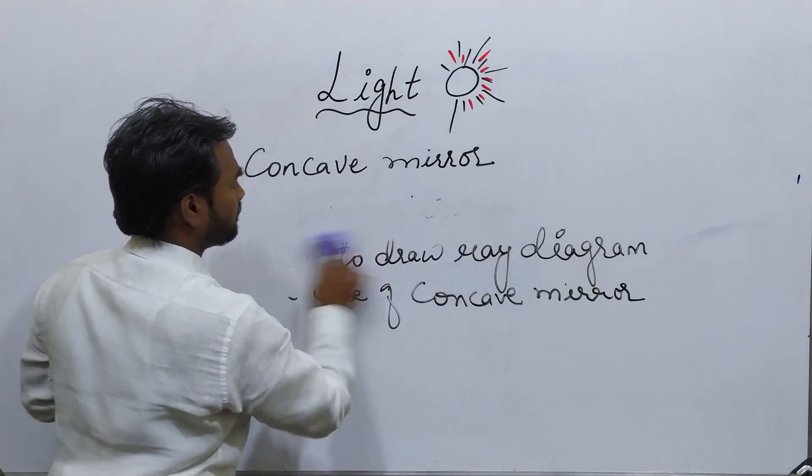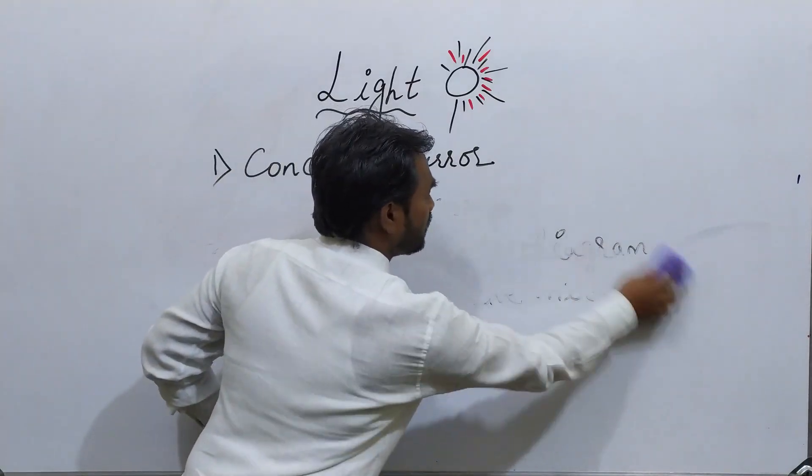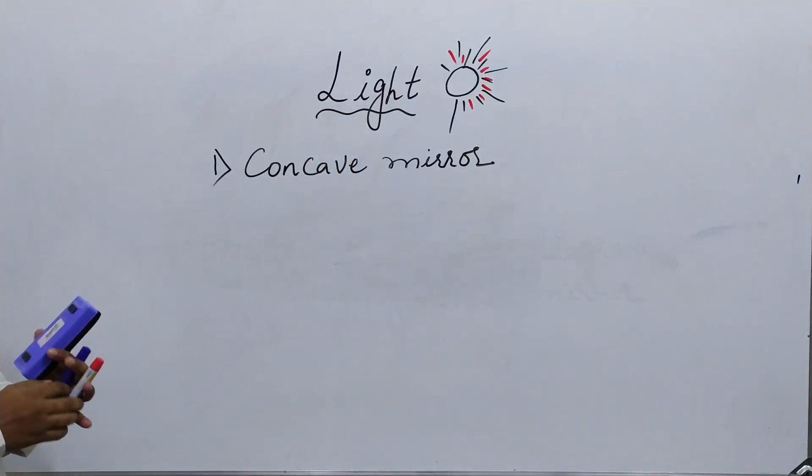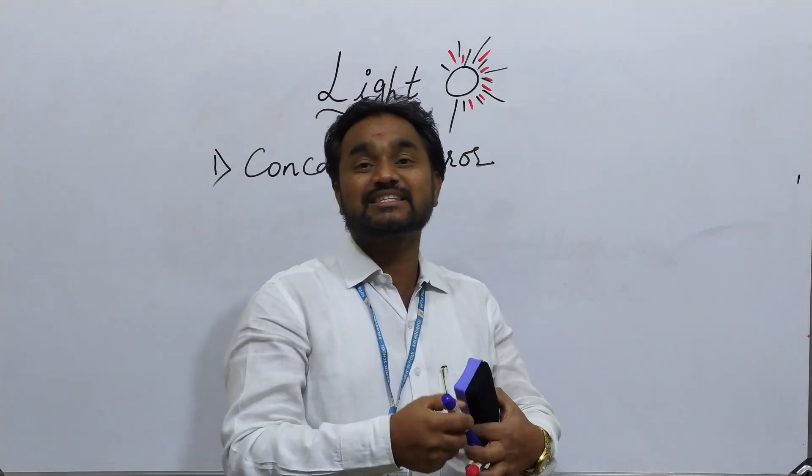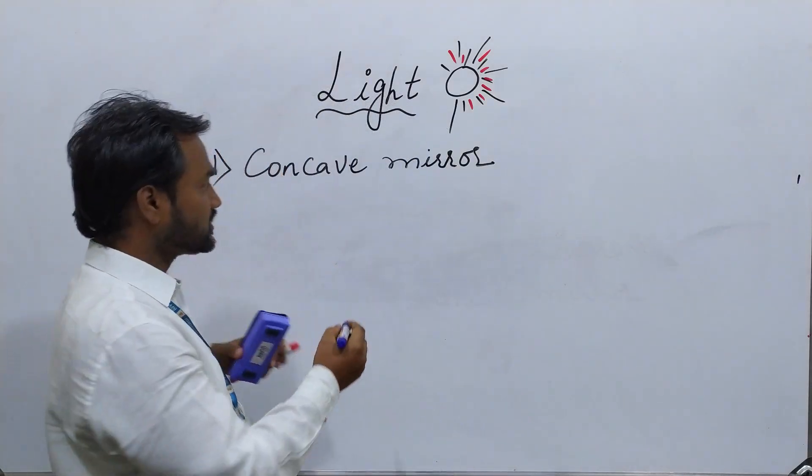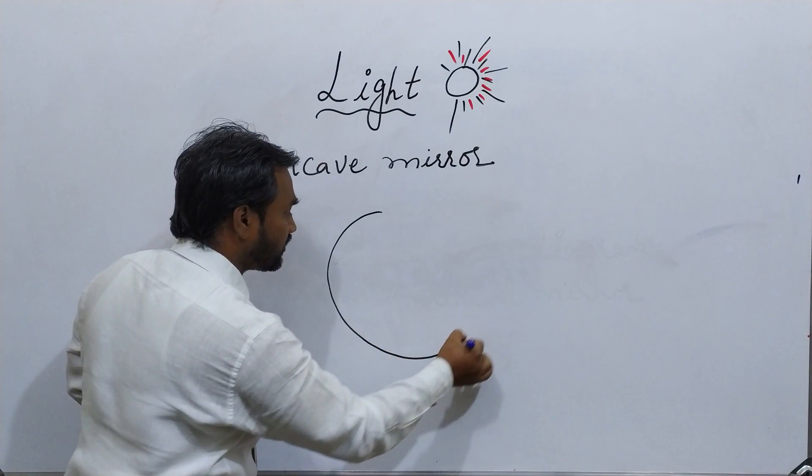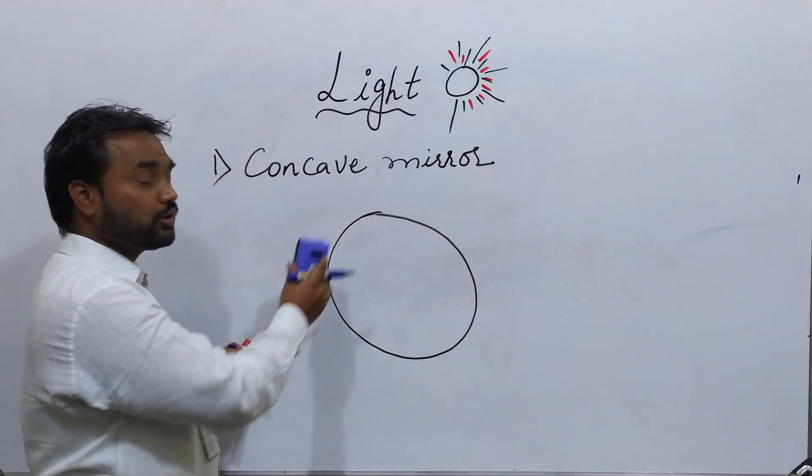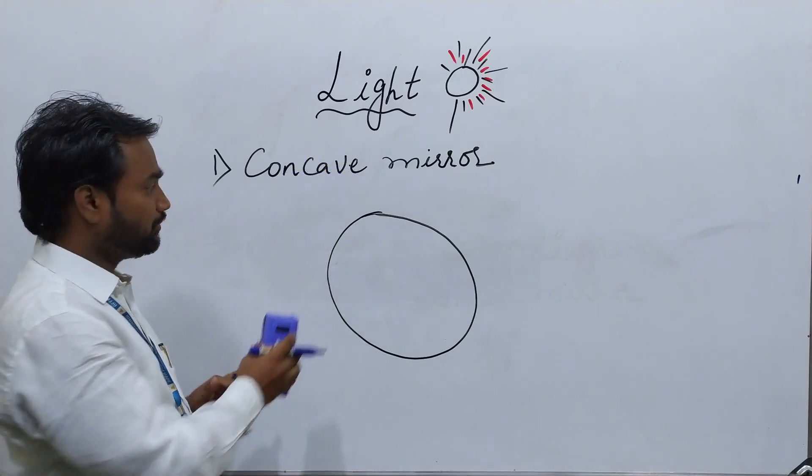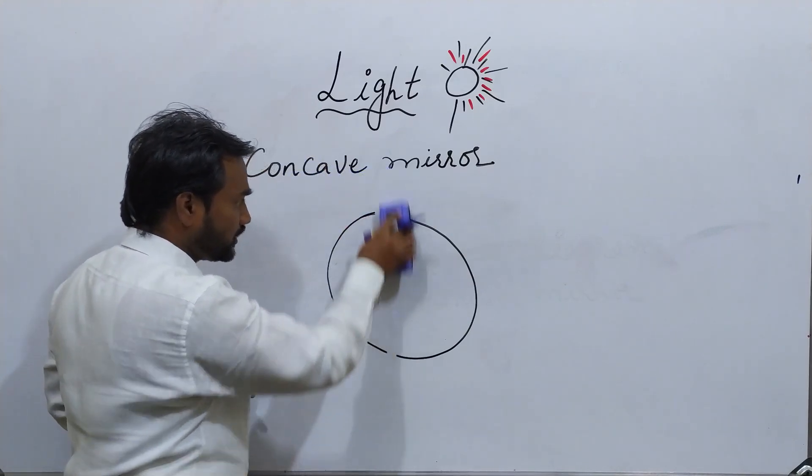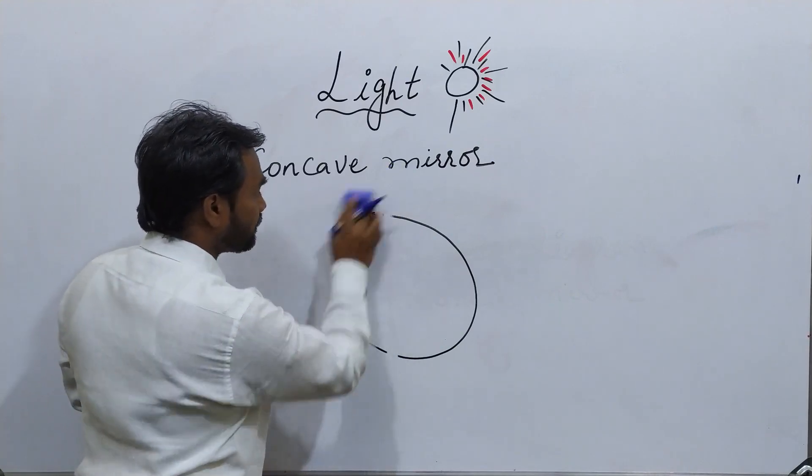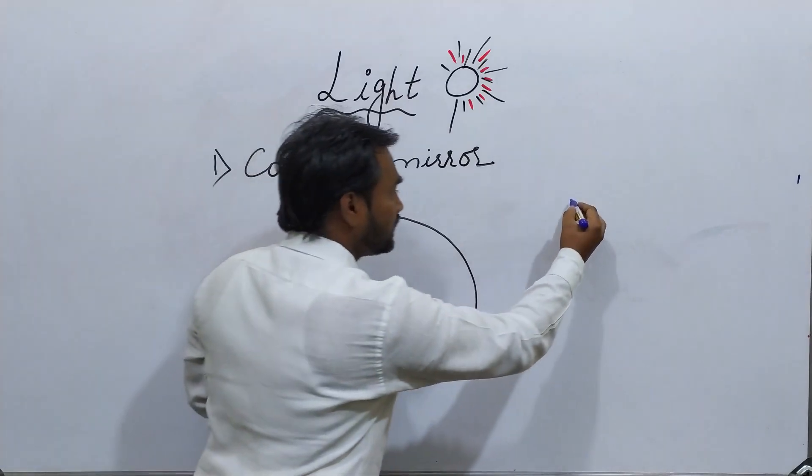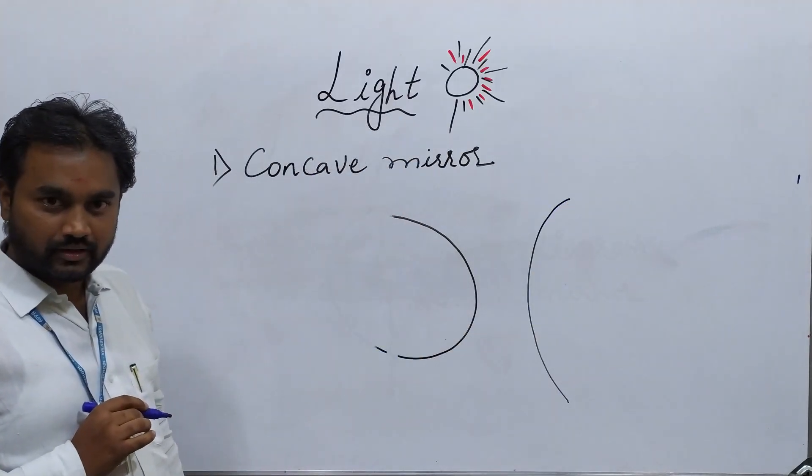To draw this concave mirror, you know this concave mirror is a part of spherical mirror, which is in the circular shape. This is a spherical mirror. When you are going to divide this circular shape, you are getting two parts - one is this shape and the other one is of this shape.